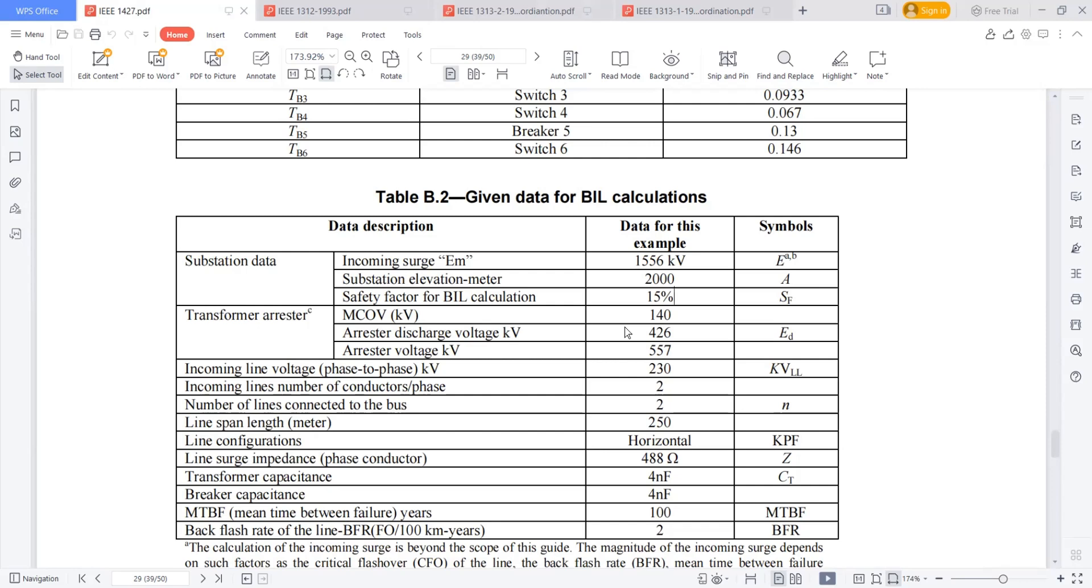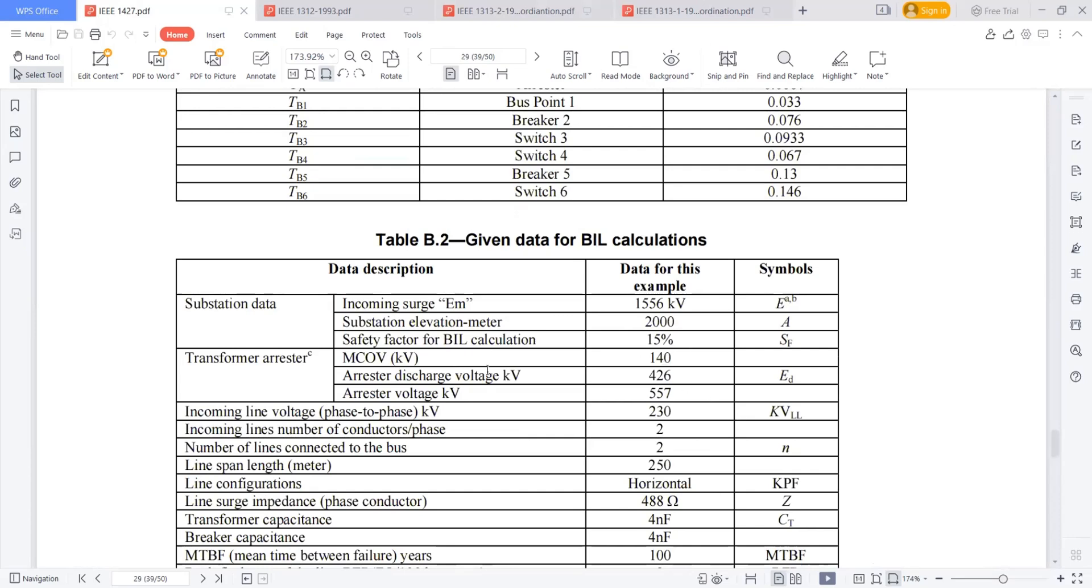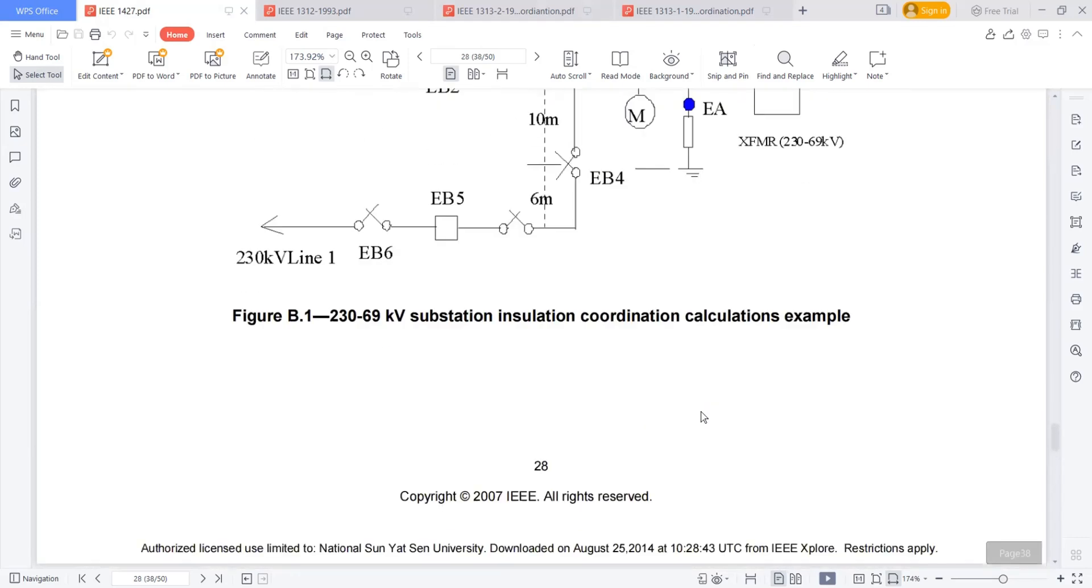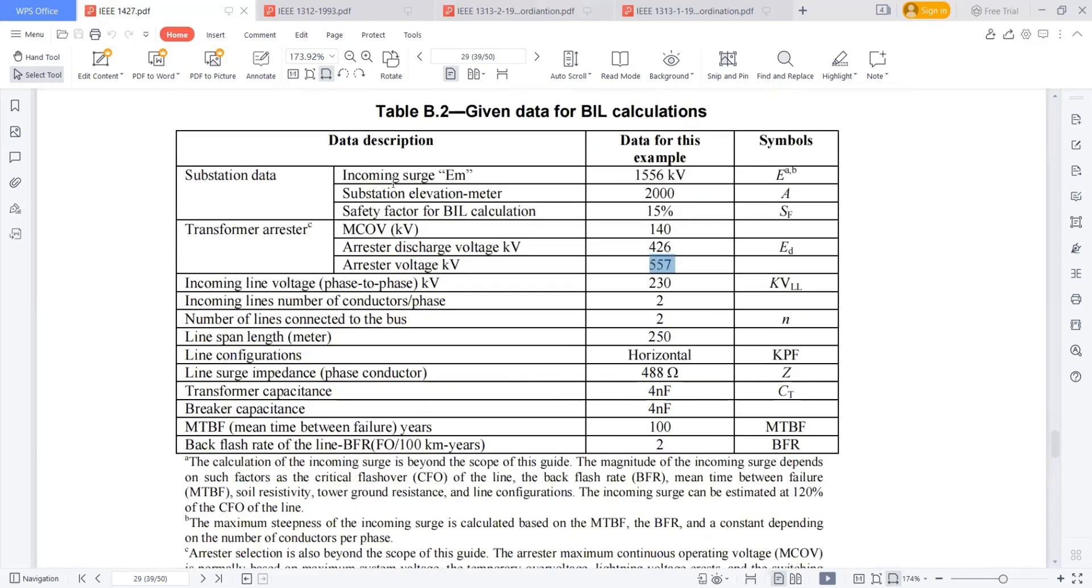Like we have done the calculation for the lightning arrestor, right? Like for the 230 kV system, just to calculate the phase to ground, 230 by root 3, 132.79 into 1.1, which is 146. So taking into solidly grounding factor, all these things, he selected 140 kV. And arrestor discharge voltage, what is the discharge voltage of this arrestor? Suppose it is 426 kilovolts. This is the discharge voltage of the arrestor. Arrestor voltage is 557. This is a breakdown voltage. These are the things I can get from the manufacturer.